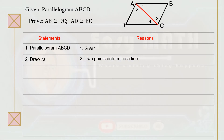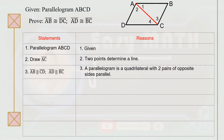Statement number two: draw segment AC. Remember that two points determine a line. Statement number three: segment AB is parallel to segment CD, and segment AD is parallel to segment BC.